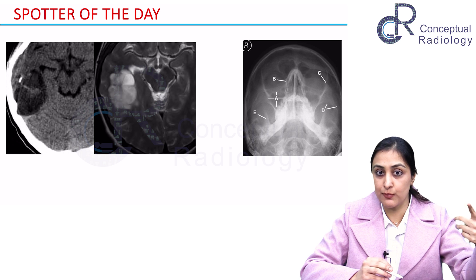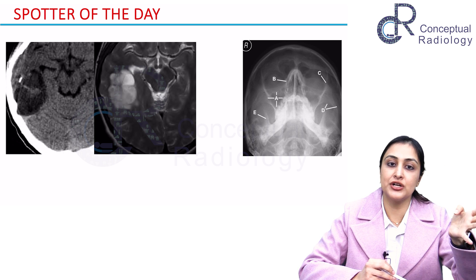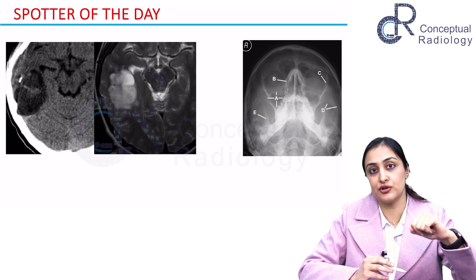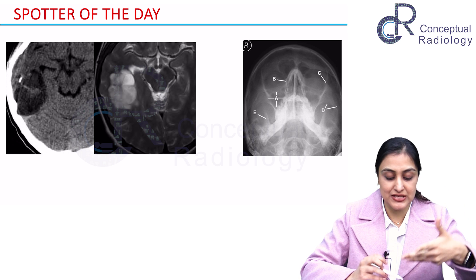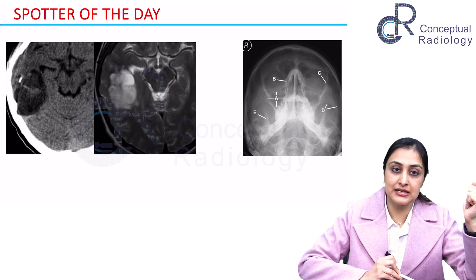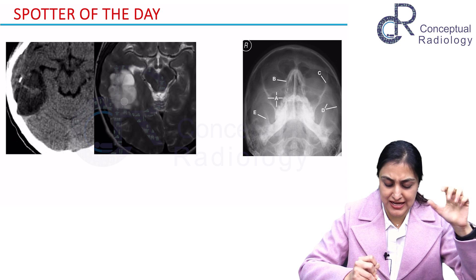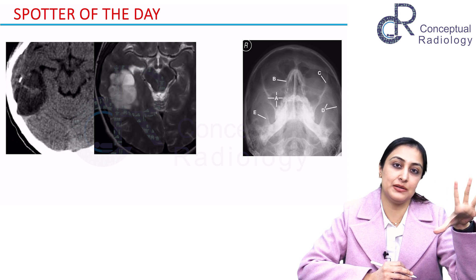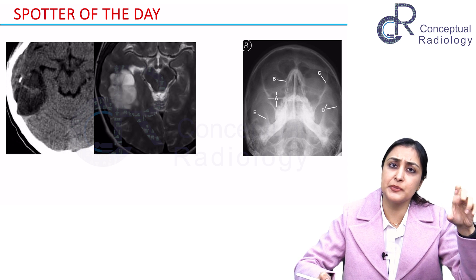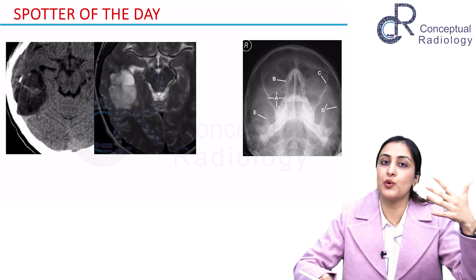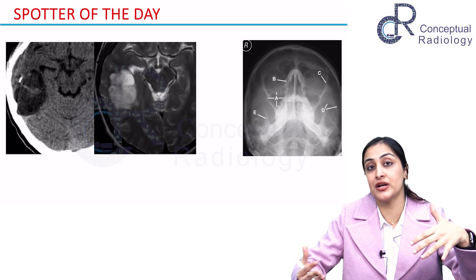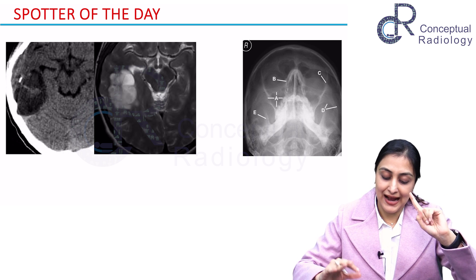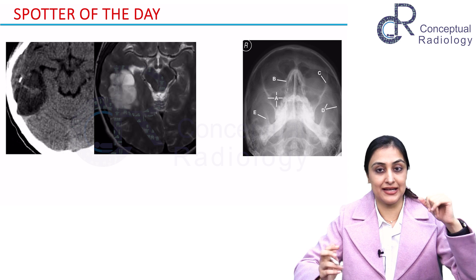In addition, on the app you will find two special daily features. The first is the Spotter of the Day — daily we will upload one spotter, give you the image, the diagnosis, and the differential diagnoses. For example, you can see a cystic lesion on CT with a focus of calcification and multi-lobulated T2 hyperintense signal intensity — very typical for a DNET. This way we keep covering spotters, which are very important for our exams, on a day-to-day basis.